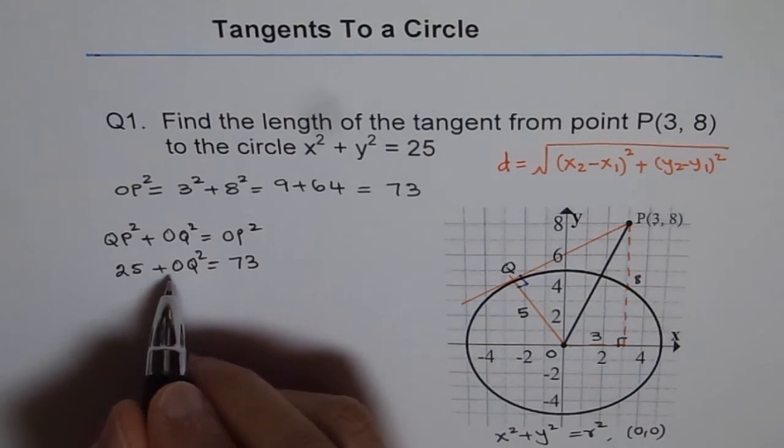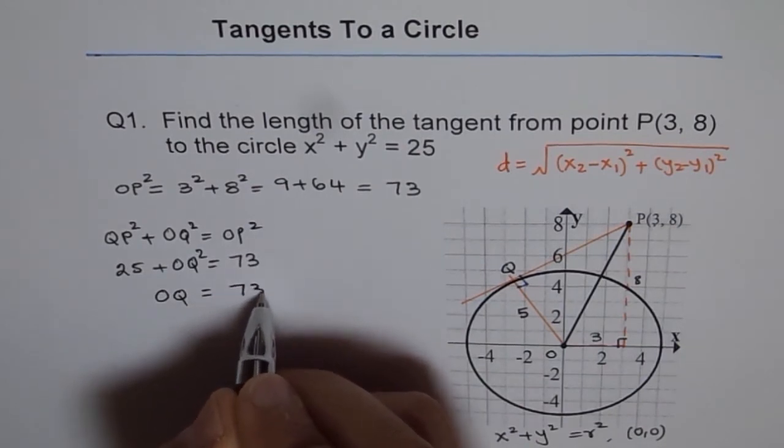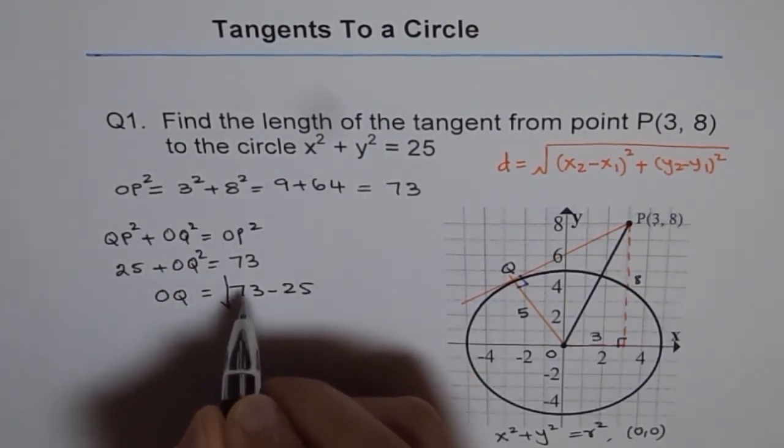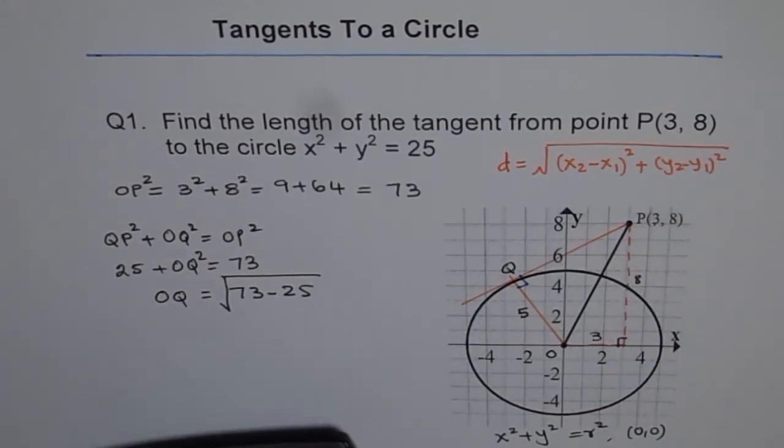So from here, we can rearrange and find what OQ is. OQ will be equals to 73 minus 25, that is OQ square. So we'll square root it to get our answer. So that is how we can find the length of the tangent from a point to the circle.